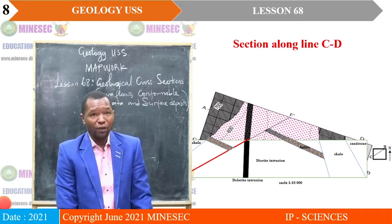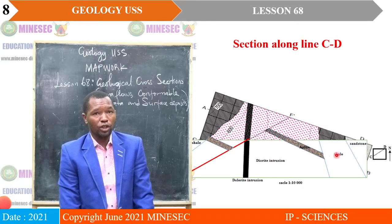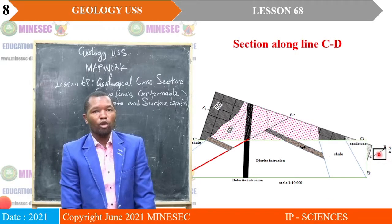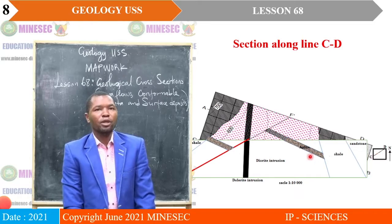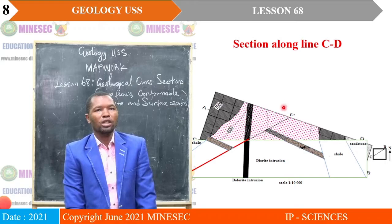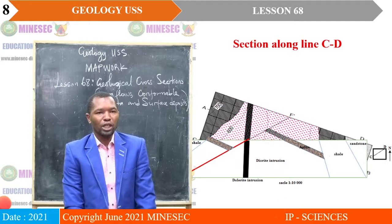Remember that for each cross-section, include the direction of north, the small box indicating how the section line has been obtained from the map, the scale, and the title. These are very important.